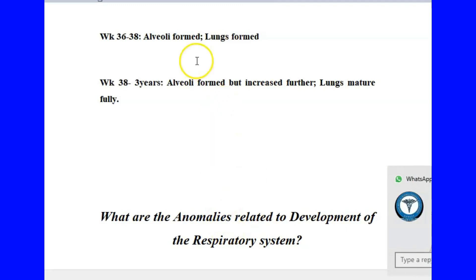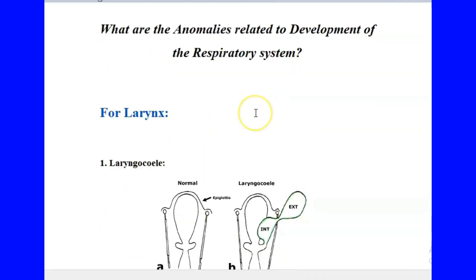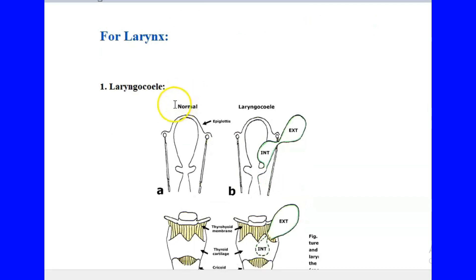So what are the anomalies related to the development of the respiratory system? I'm going to start with the larynx, then move on to the bronchi, and then the lungs. For the larynx, there is a condition called laryngocele — it is simply an abnormally sized larynx, when the larynx is larger than its normal size.